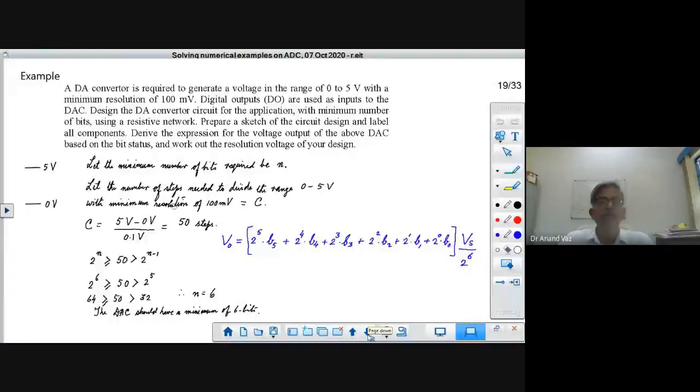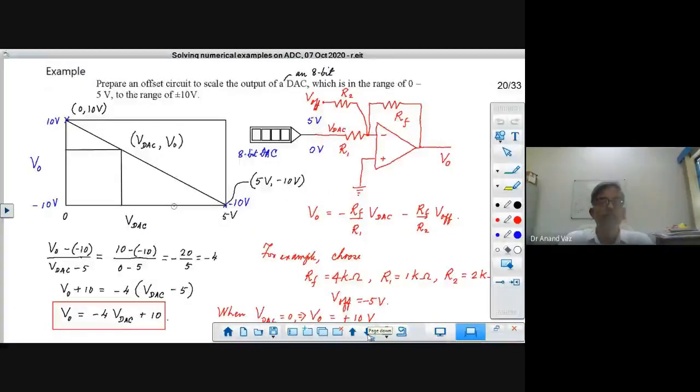We also did an example on an offsetting circuit, offsetting and amplification circuit, where we had to scale up a signal. We had to prepare an offset circuit and take the output from a DAC which was in a unipolar range 0 to 5 volts to a bipolar range of plus minus 10 volts. We saw how this could be done and realized in the form of an analog circuit.